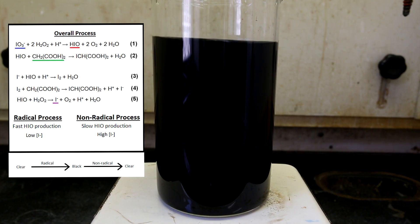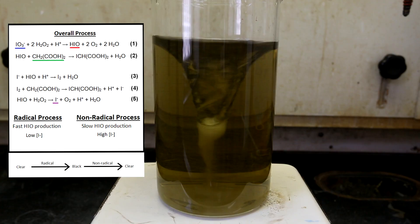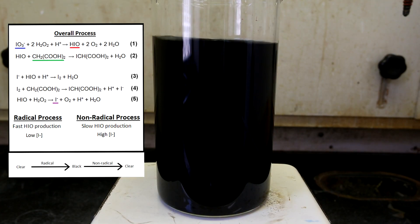As mentioned before, the radical process produces hypoiodous acid very quickly, and it will produce it much quicker than it can react with a malonic acid. This rapid rate of production of hypoiodous acid leads to an excess of it in solution. The excess hypoiodous acid then reacts with hydrogen peroxide to form the iodide ion as shown in equation 5, underlined in purple. Then, as shown in equation 3, this iodide ion will react with hypoiodous acid to produce iodine. In solution, iodine has a yellow color, so as its concentration builds up, the solution becomes darker and darker yellow.